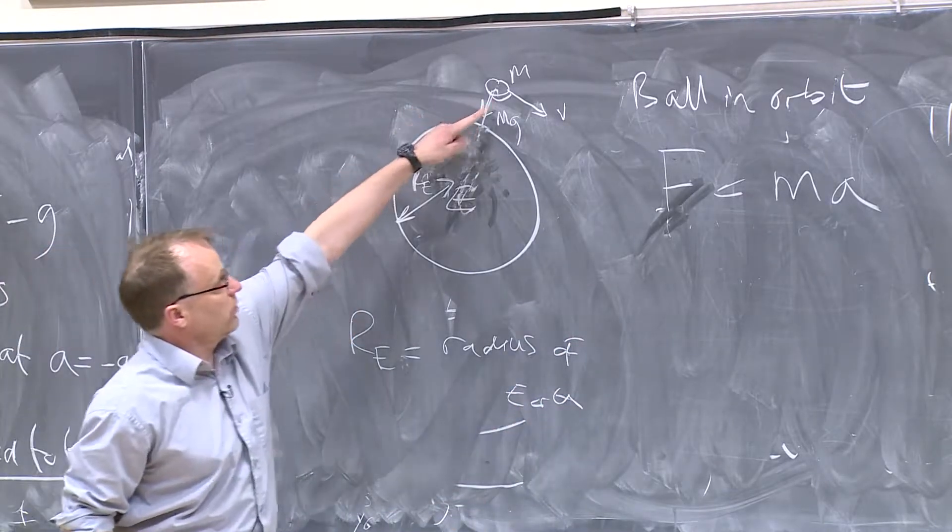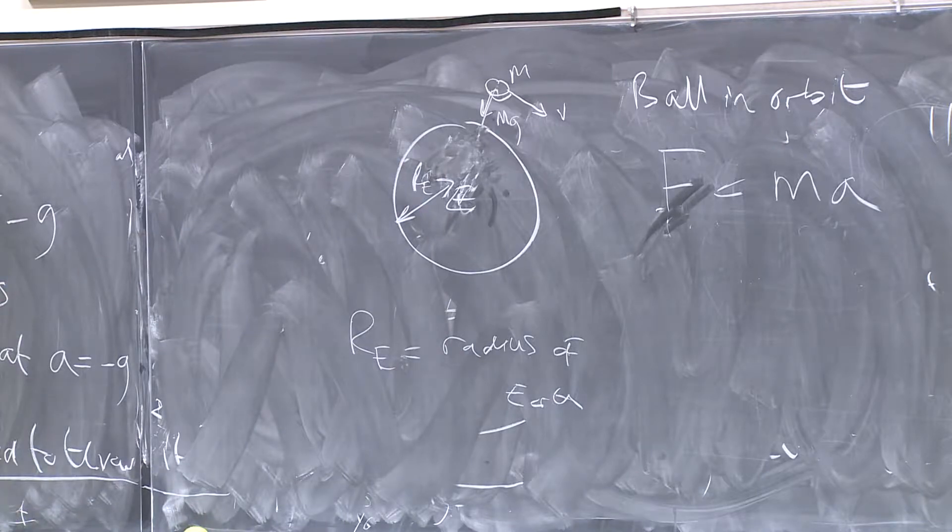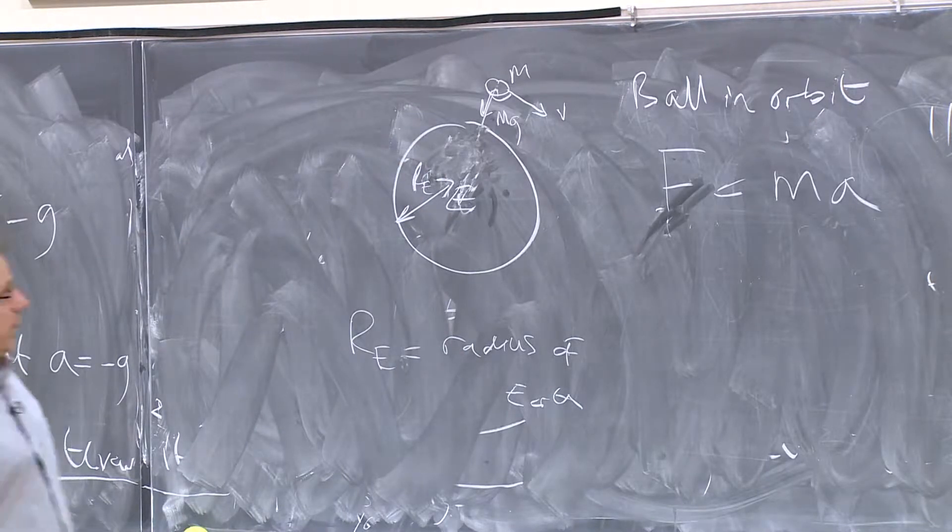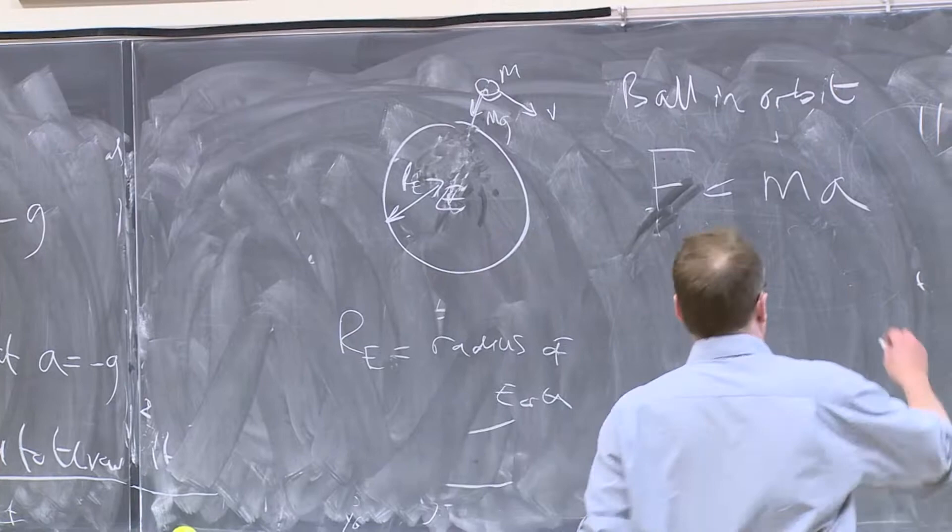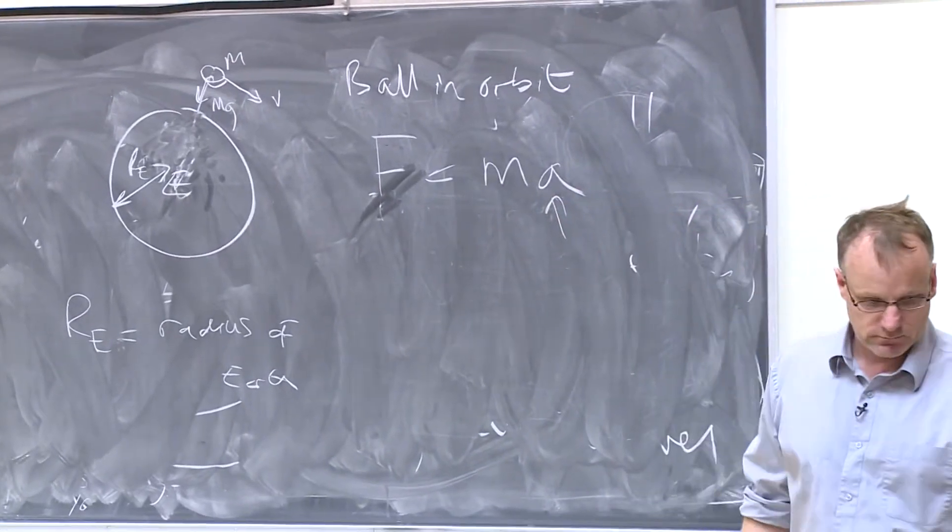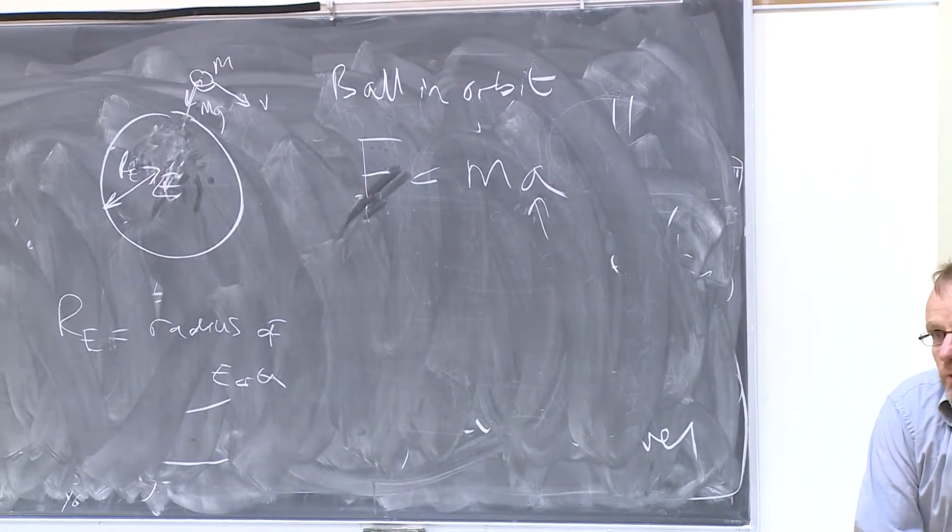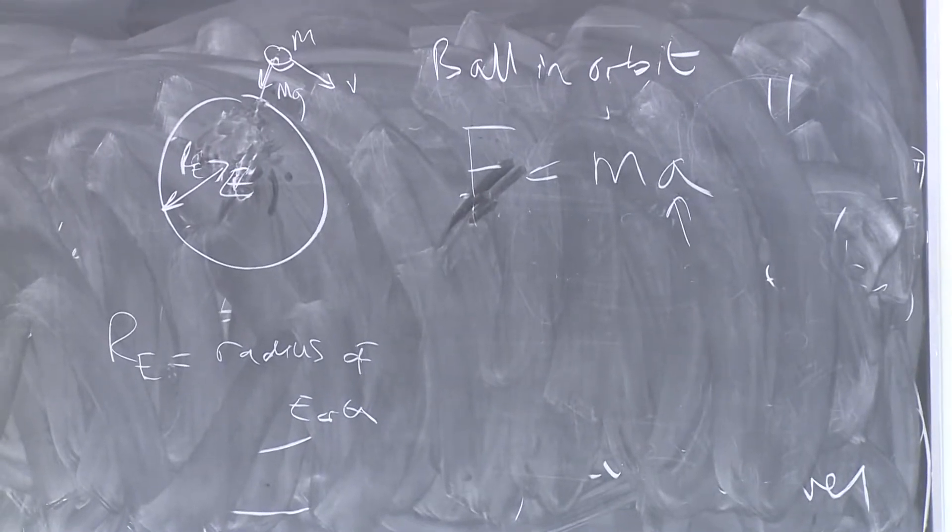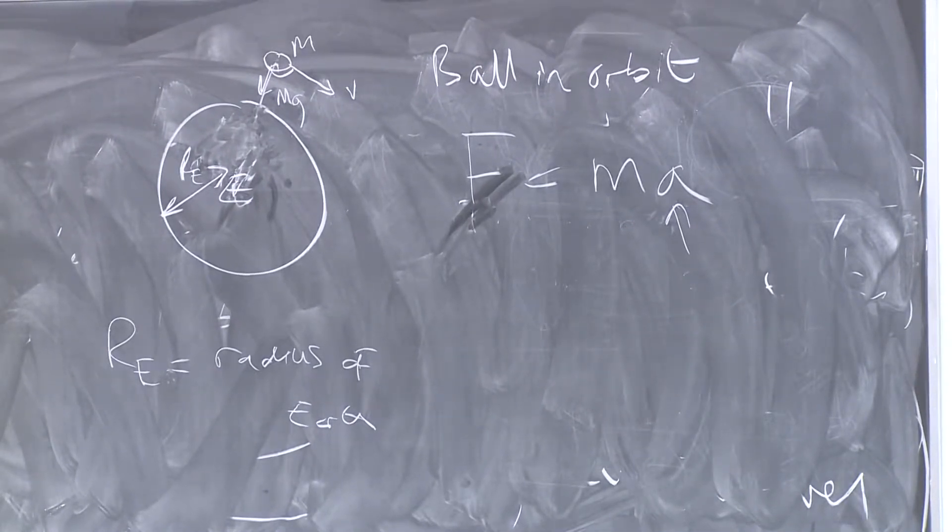So here's the Earth. The ball with the velocity v in orbit. So what's the acceleration? What's the value of A for this thing in orbit, roughly? What is the acceleration for something in orbit?